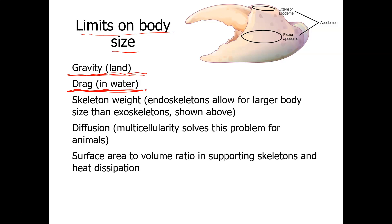Endoskeletons, like humans have, allow for a larger body size than exoskeletons, like those of insects, crabs, and lobsters. The bones of an endoskeleton are inside the tissues. One thing that helps overcome body-size limits is diffusion, which allows nutrients, oxygen, and waste materials to travel from cell to cell. This allows animals to be multicellular, and that is what allows them to grow extremely large.